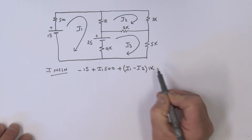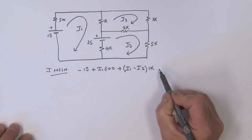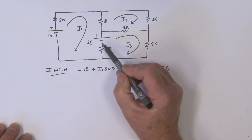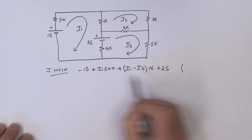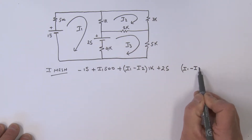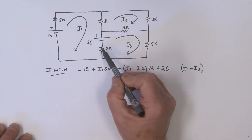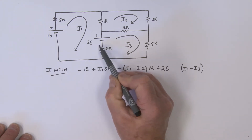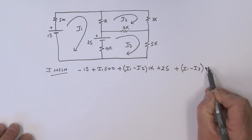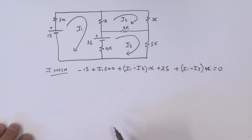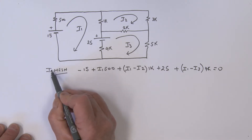That term is times 1k. Then we've got the next component, a voltage source — we're hitting the plus first, so we call that plus 25. Then we've got the 4k resistor: opening a bracket, this is I1 minus I3, and since I've defined I1 minus I3, that's defining the voltage plus-minus across it, so we're hitting the plus first. That gives us plus (I1 minus I3) times 4k, and all of that equals zero. That is our first mesh current equation.